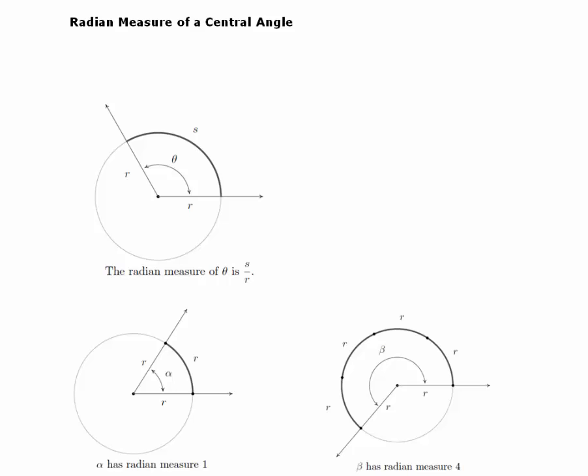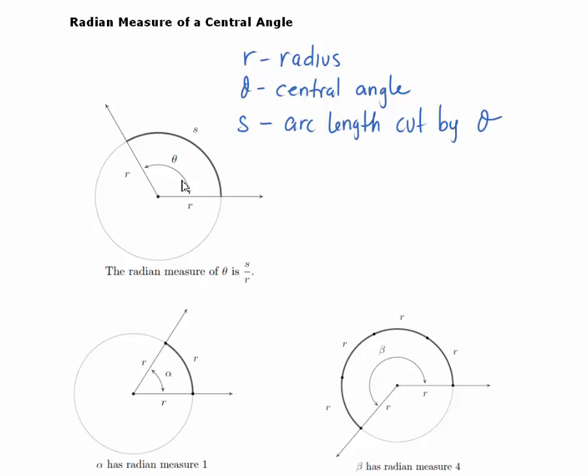In this lesson, we're going to look at the radian measure of a central angle. We first want to consider a central angle that's in a circle with a radius of r and an arc length of s. The radian measure of theta is simply a ratio — it is the ratio of the arc length to the radius of the circle. So theta in radian measure would simply equal s over r.